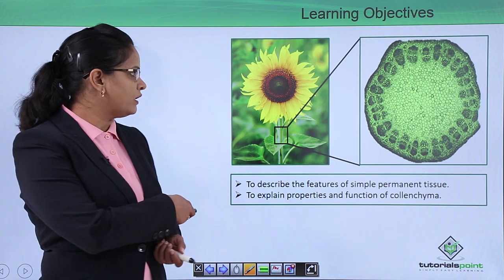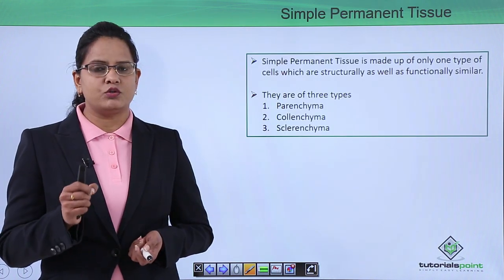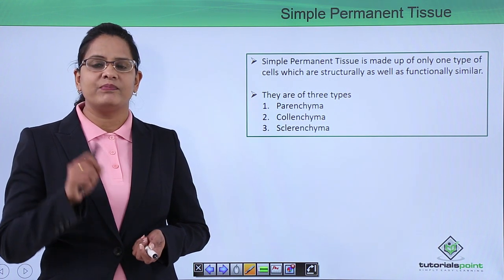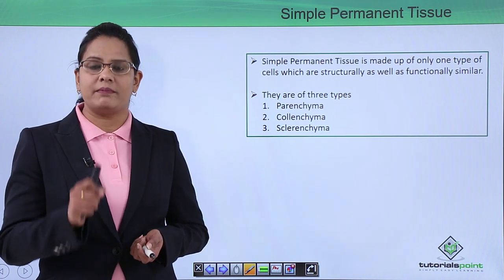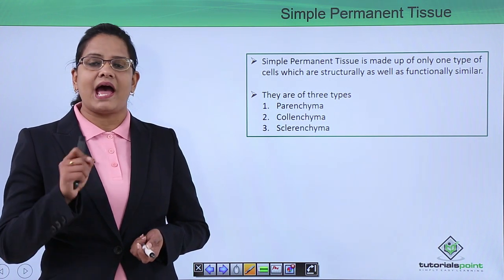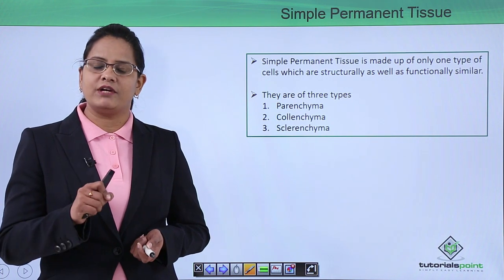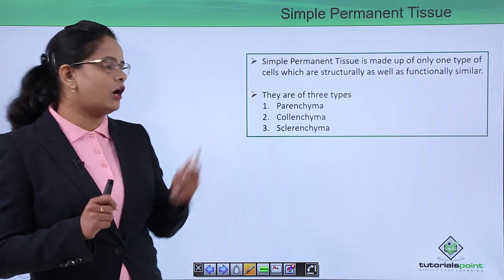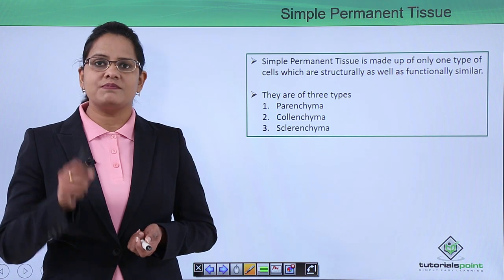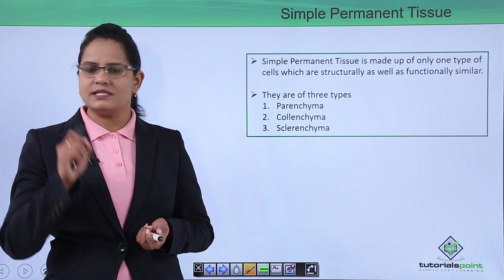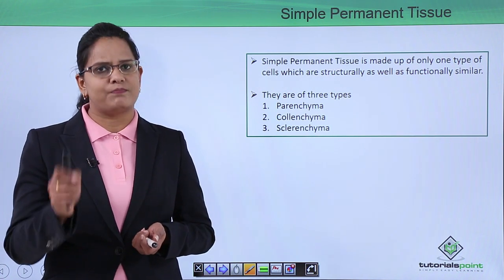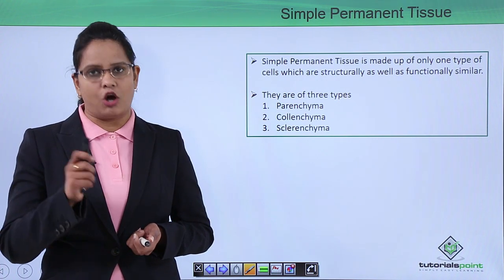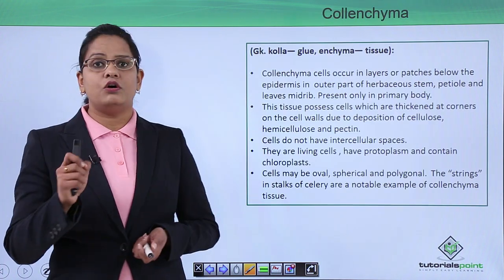Simple permanent tissues, as we have discussed, let us take a quick recap. They are those tissues which are made up of one type of cells and have become structurally as well as functionally similar. There are three types: parenchyma, colenchyma, and sclerenchyma. We've already discussed parenchyma in previous videos. Let us now discuss colenchyma.